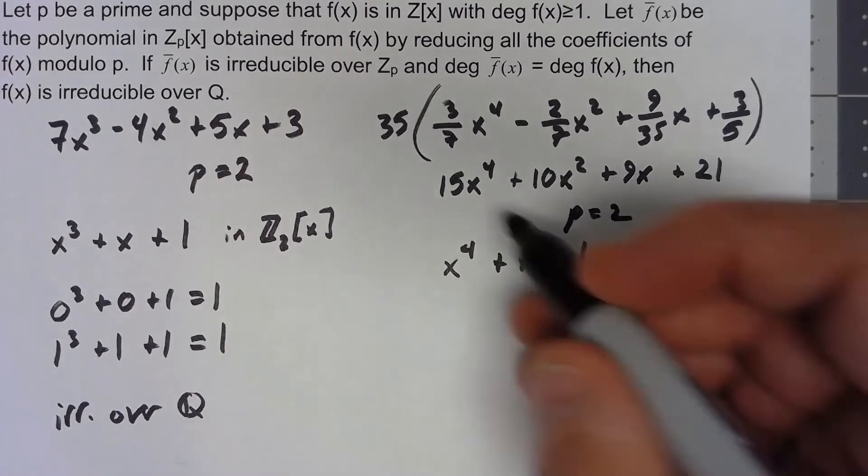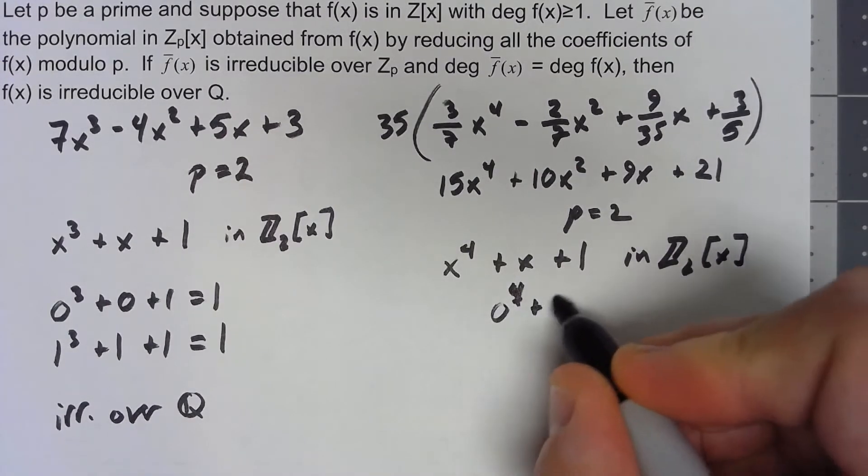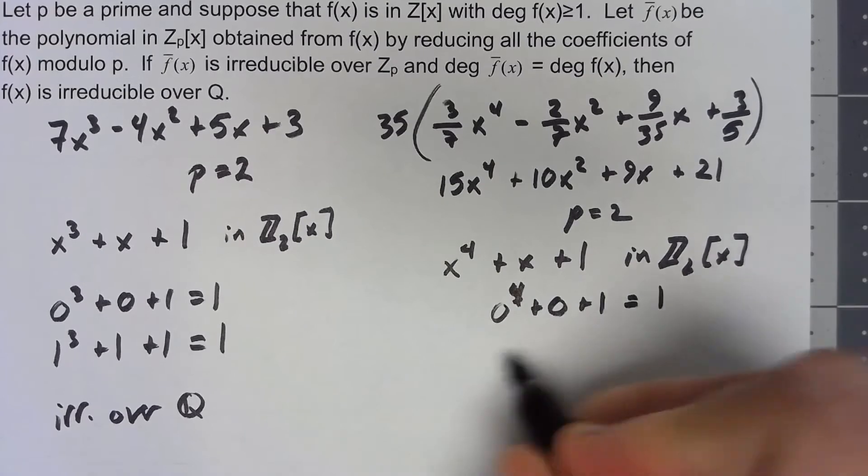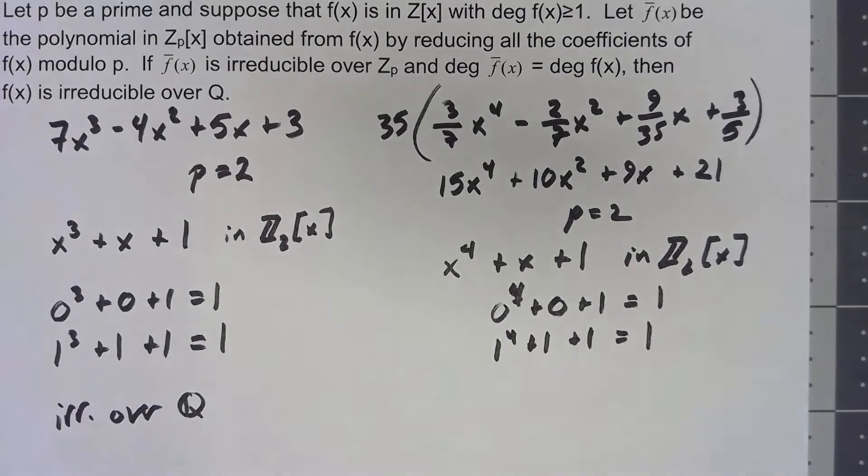Now we still can check that 0⁴ + 0 + 1 gives us 1, and 1⁴ + 1 + 1 gives us 1. So this still says that it has no linear factors.